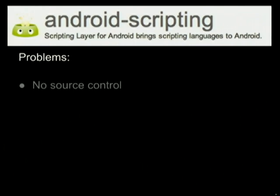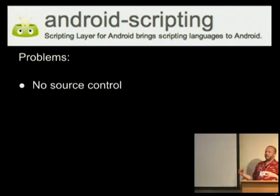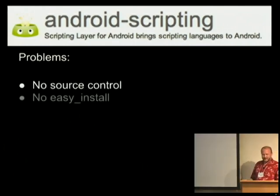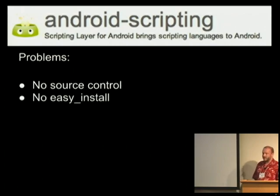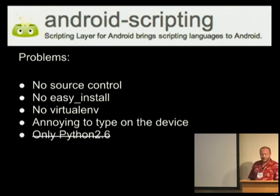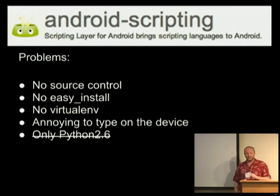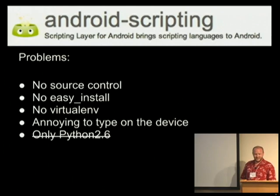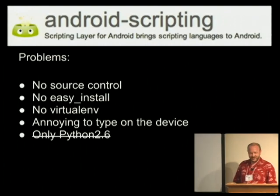A few problems with writing scripts on your phone: there's no source control, no easy install, installing outside modules is kind of a pain, no virtualenv, and it's annoying to type on the tiny device. Also, only Python 2.6? Actually, while putting this talk together, he learned they have Python 3 out there too, so Python 3 may be available — he didn't try it today, but it's there.